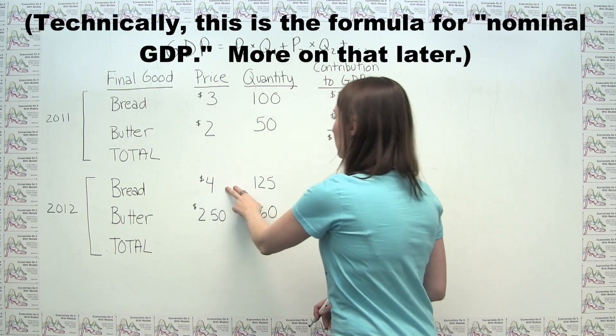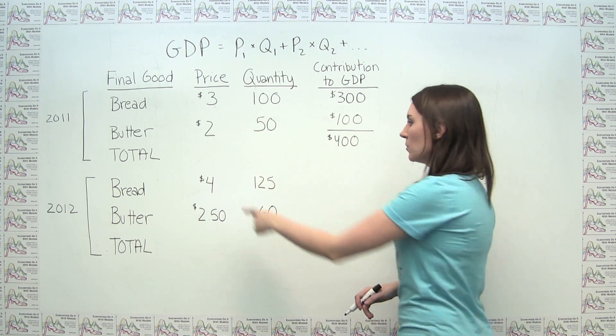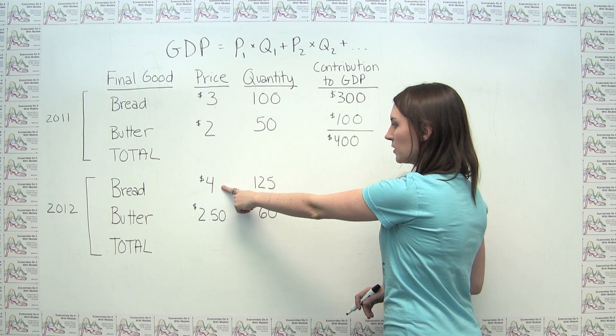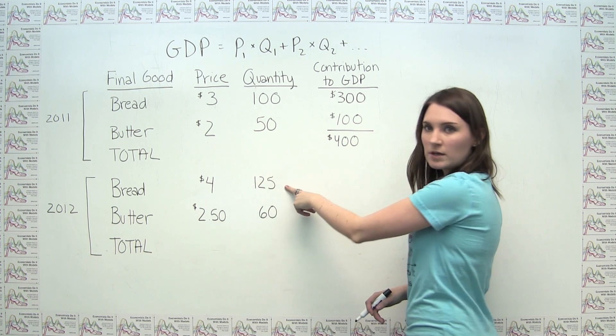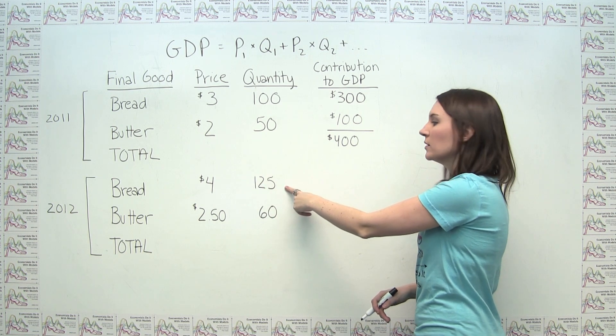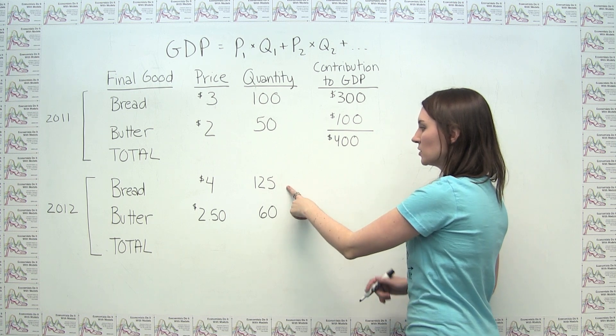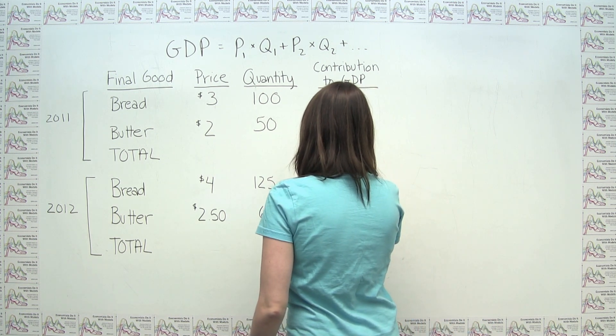So here, if we're going to think about bread's contribution to GDP, while bread is now selling at a price of $4, and we're selling 125 units of bread, so bread's contribution is just 4 times 125, or $500.